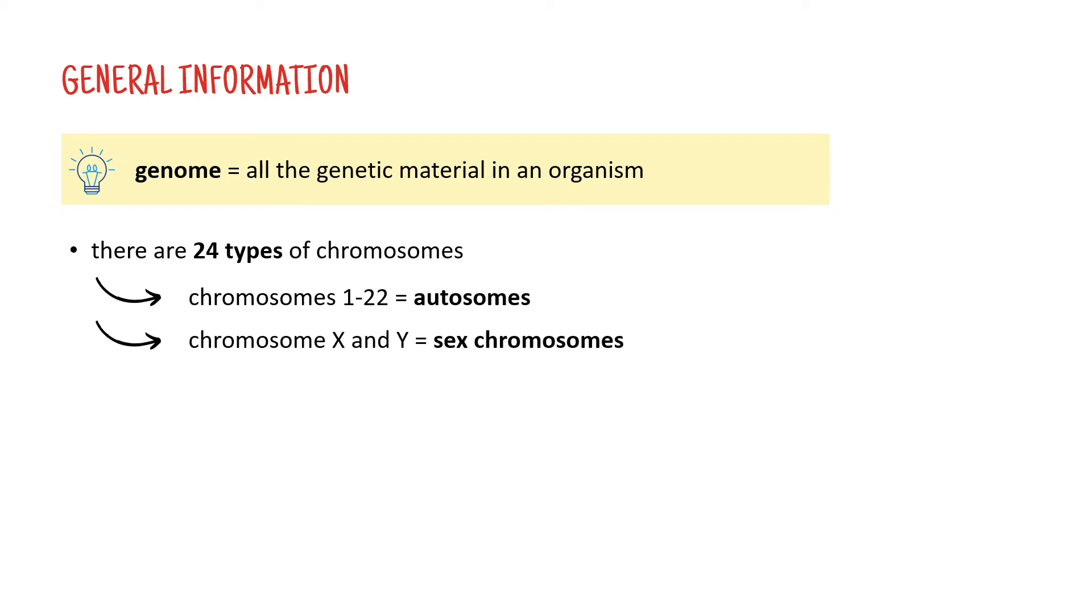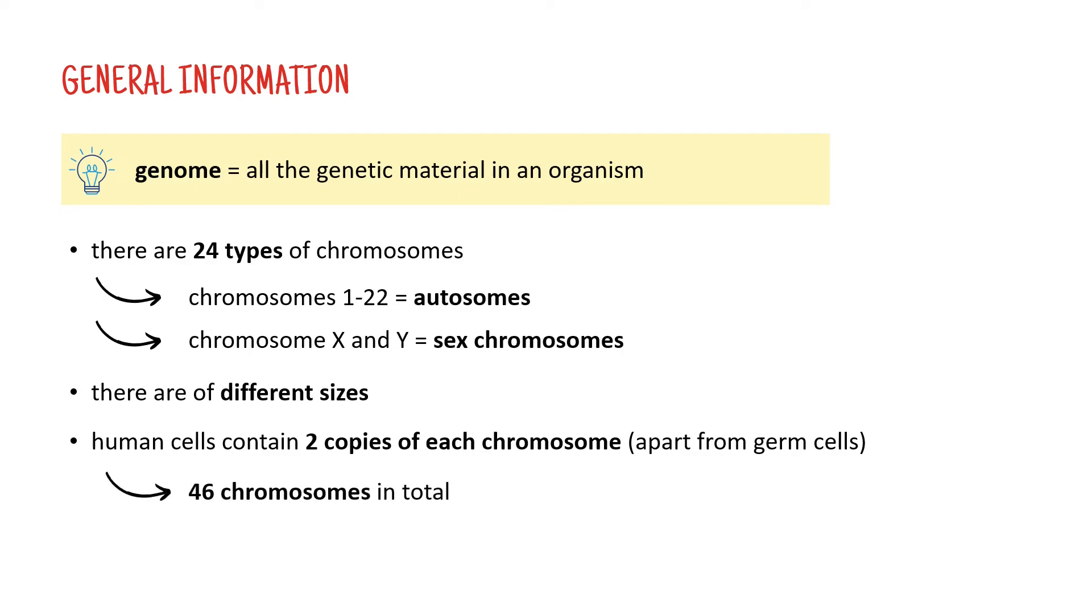As you know, women have two X chromosomes and men have one X and one Y chromosome. All these chromosomes are of different sizes but we're also going to talk about this later. Now human cells contain two copies of each chromosome, so two copies of chromosome 1, two copies of chromosome 2, etc. Together making 23 pairs totaling 46 chromosomes.